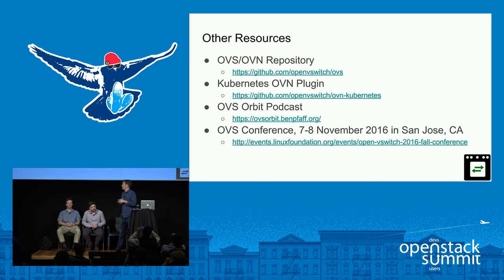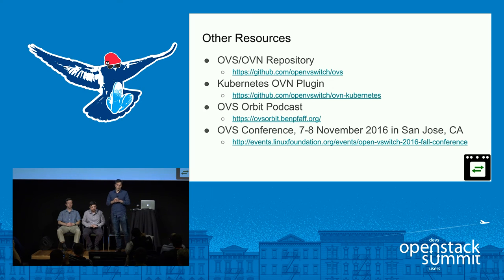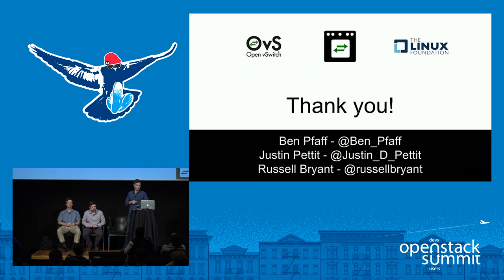A few resources: the OVS and OVN repos are hosted on GitHub, all development happens on the OVS dev mailing list, and we have weekly IRC meetings discussing OVN in particular. The Kubernetes OVN plugin is available at its own URL. Ben has been doing a podcast on OVS called OVS Orbit. We also have a conference coming up in a couple of weeks in San Jose, California on November 7th and 8th.